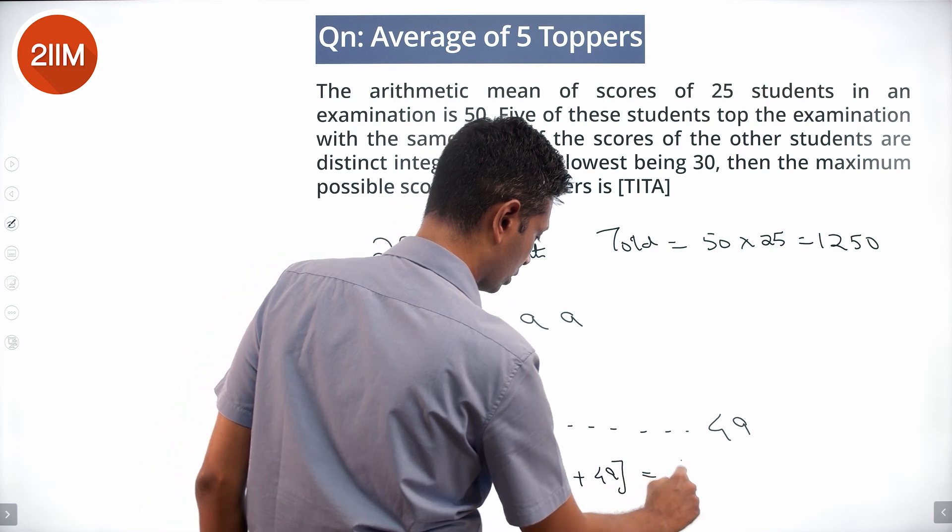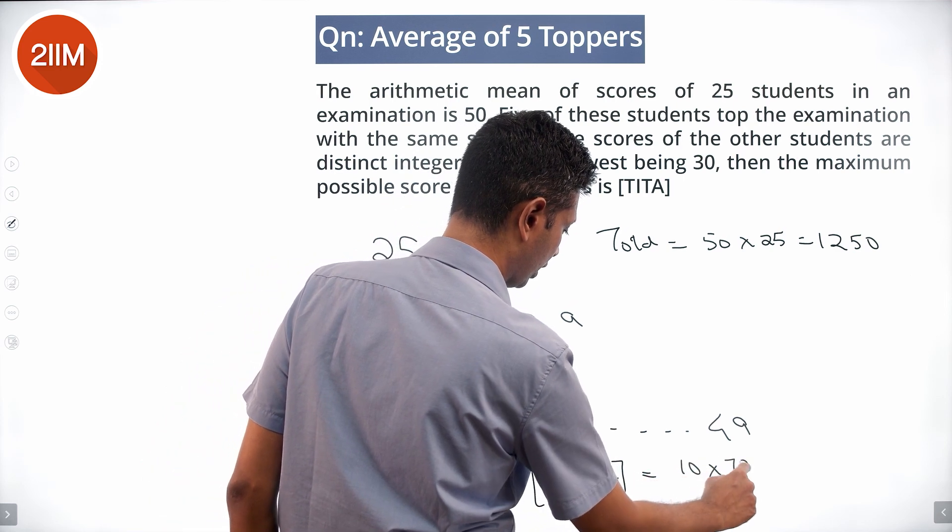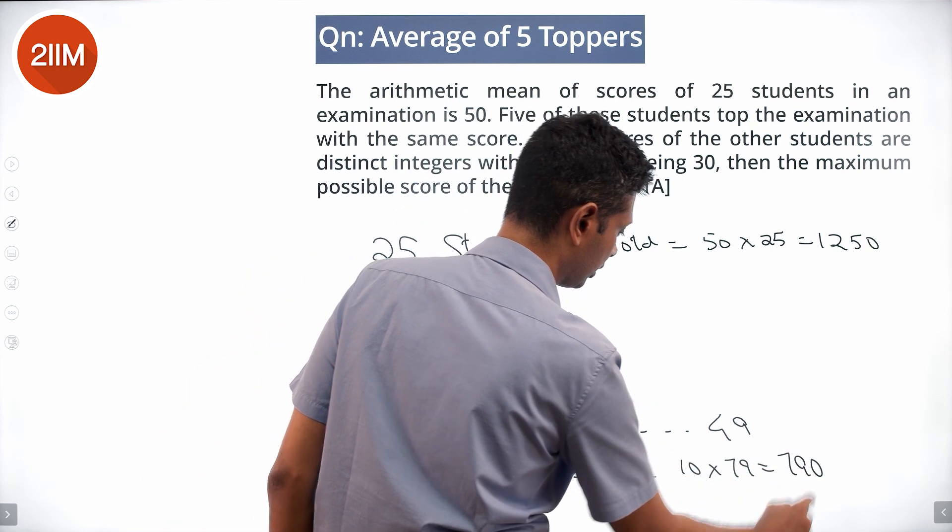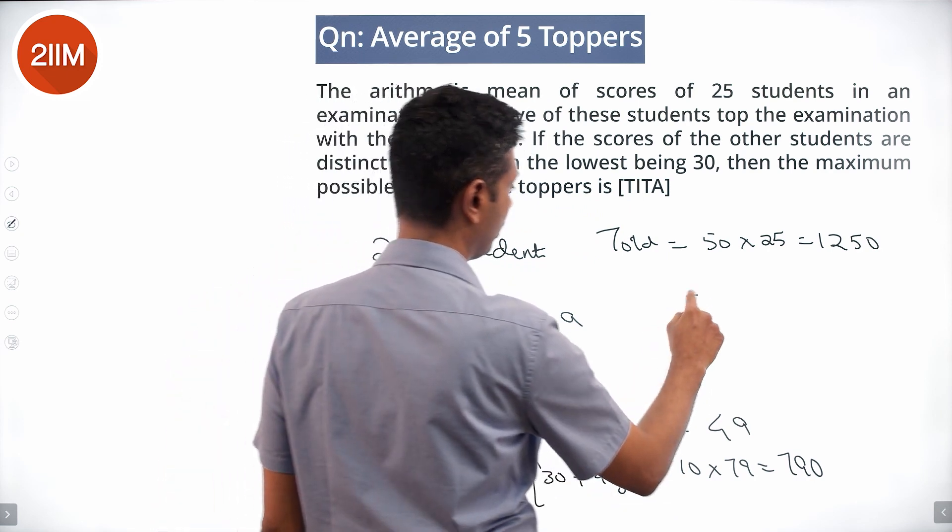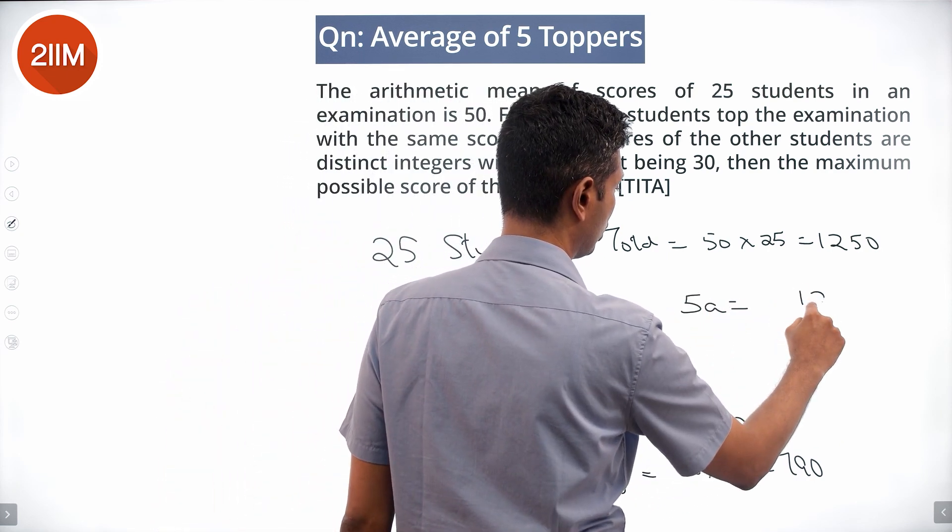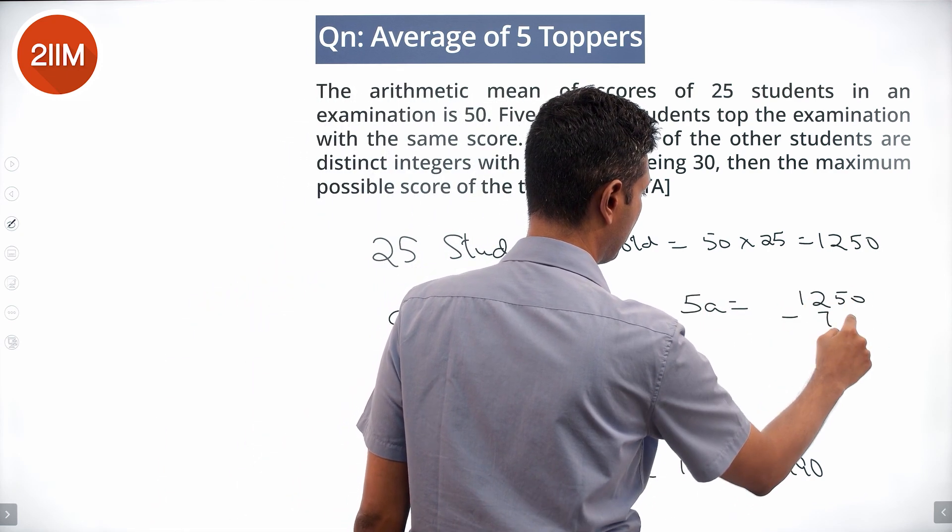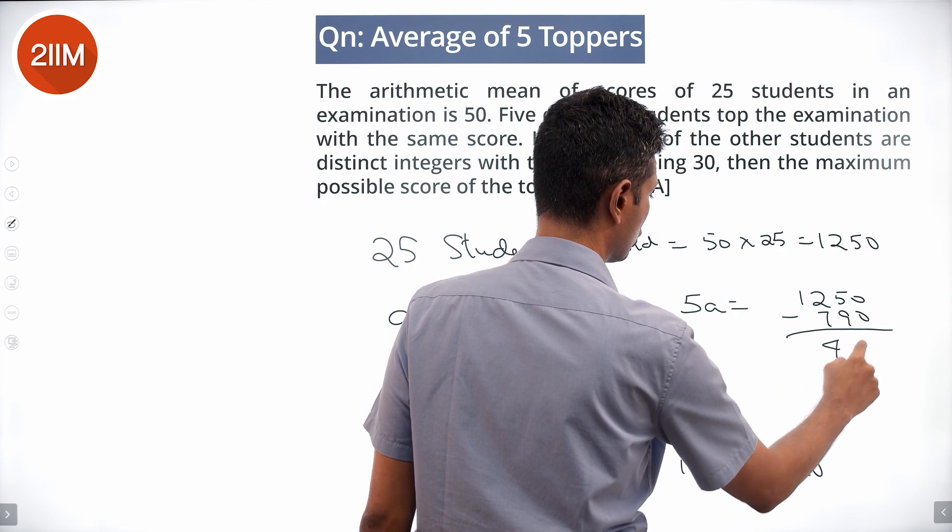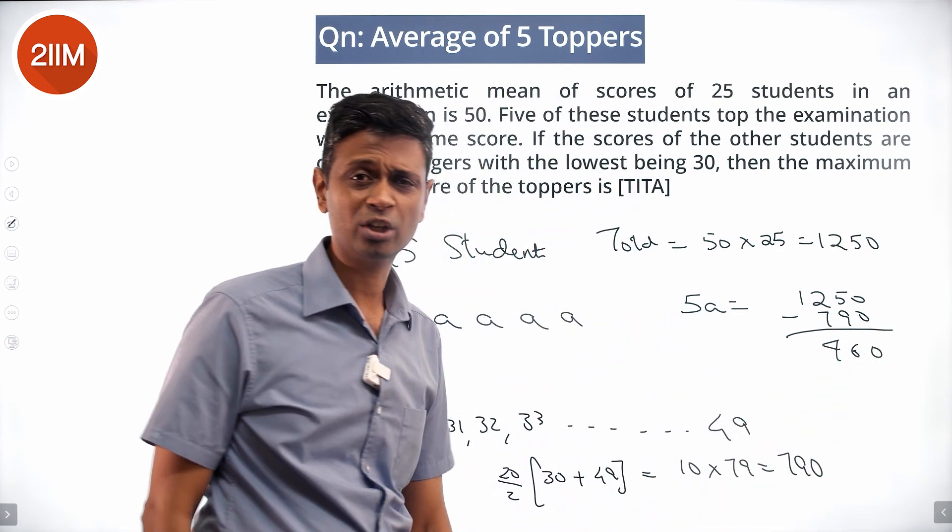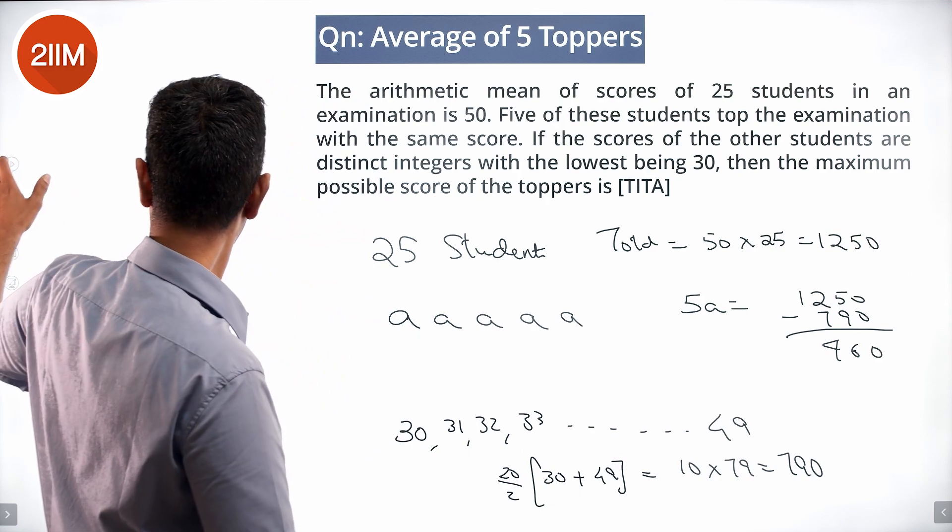Which is 790. So 5a equals 1250 minus 790, which is 460. 5 times a is 460, so a should be 92. Maximum possible value is 92.